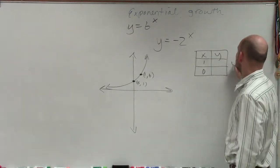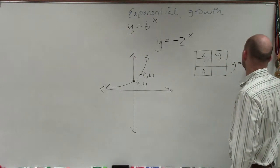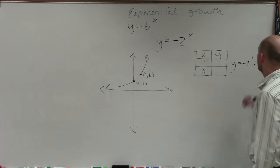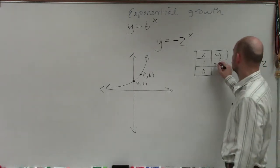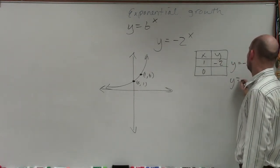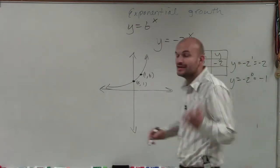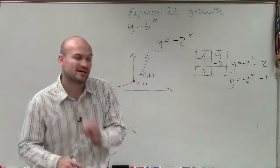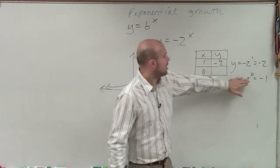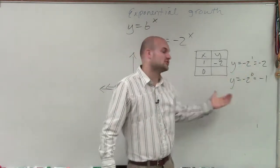When I plug in 1, what I have is y equals negative 2 raised to the first power, and that's just going to equal negative 2. When I have y equals negative 2 raised to the 0, that equals 2 raised to the 0, which is 1, times negative 1 is negative 1. You have to make sure we apply the order of operations when doing this, that we raise our base to our power before we multiply by negative 1.